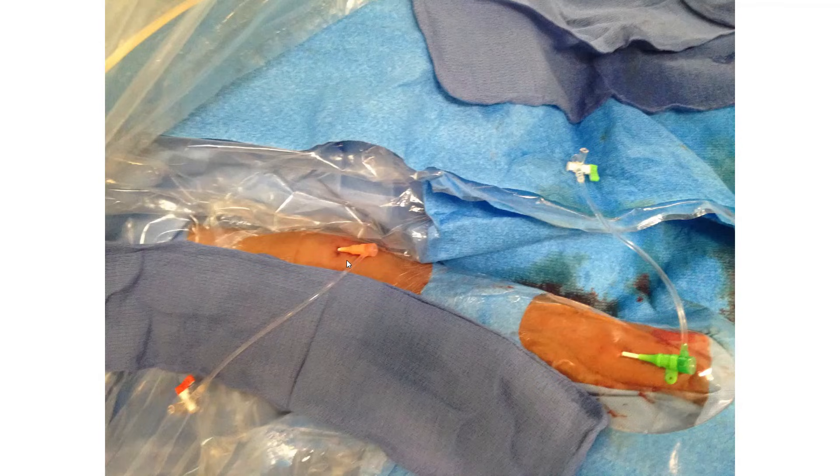Then after the sheath is placed in, then we move the arm into juxtaposed to the body and we place the radial drape with the cut at the elbow level.